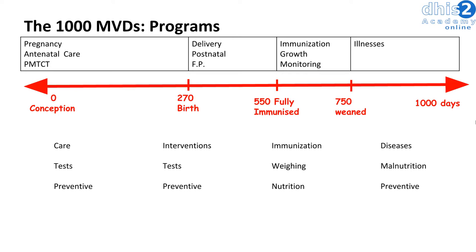By 750 days, the child should be weaned. You might also be monitoring various illnesses during this time.